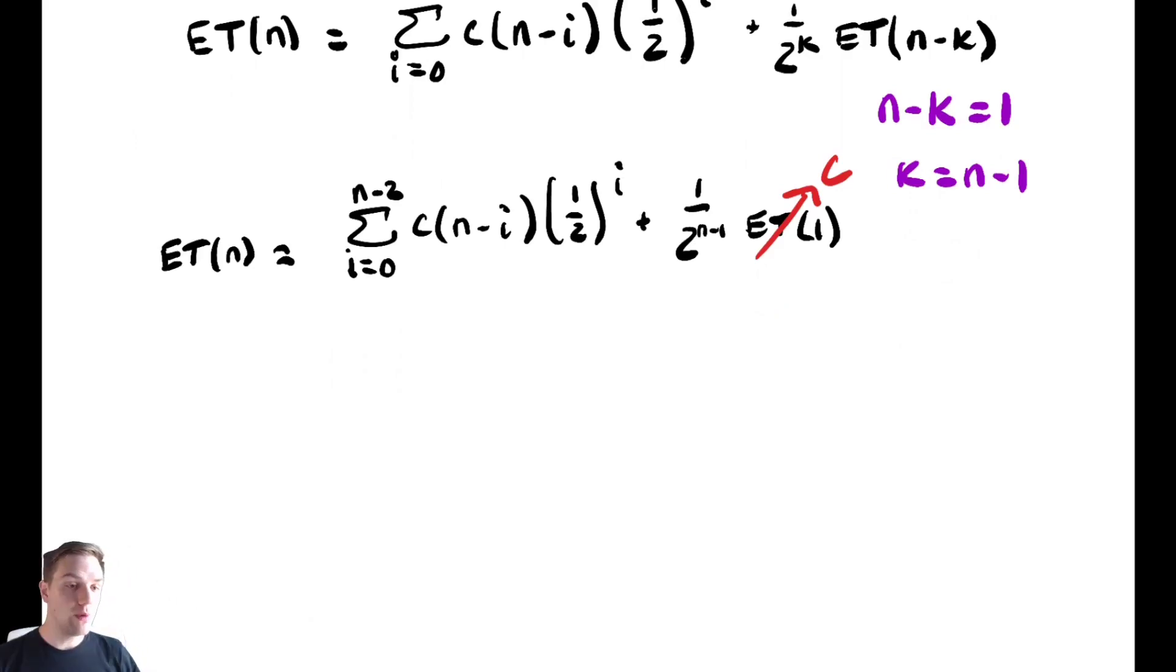So now all we have left to do is to identify what do we do with that summation. This might not be obvious, but let's see what we can do. Your first attempt might be to try and bound it using our standard bounding techniques. Say this is less than or equal to the sum from i equals 0 to n-2 of c times (n-(n-2)) times 1/2 to the (n-2), and you can keep doing that.